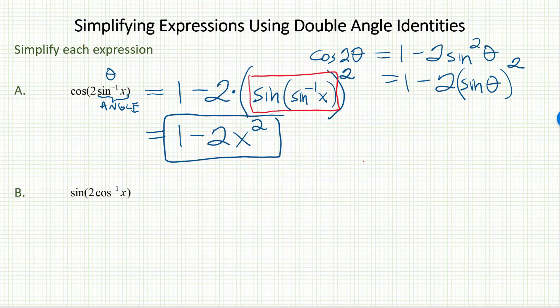Wow, we have simplified that. It doesn't even have any trig in it anymore. Cosine of that double angle is equal to 1 minus 2x squared. Okay, let's look at the second example and see what happens.